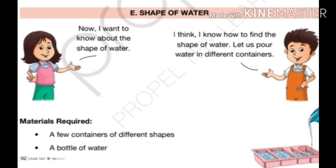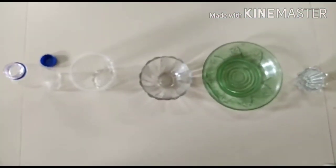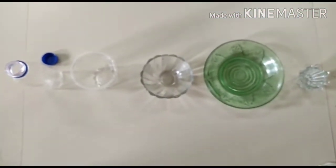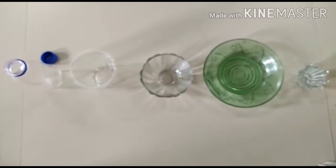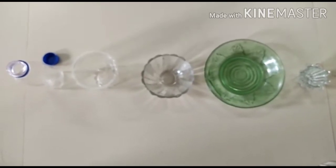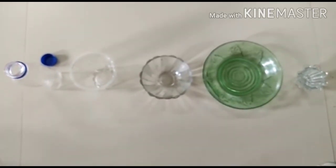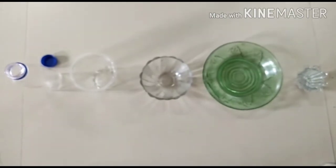Children, we are going to do the same. To do this experiment you require a few containers of different shapes and a bottle of water. Children, look at these containers and observe the shape. Now let's pour some water in one container.